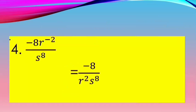Example 3: 7 to the power of negative 4, b to the power of 3, over c to the power of negative 2. The 7 to the power of negative 4 in the numerator moves to the denominator, and c to the power of negative 2 in the denominator moves to the numerator. So we get b cubed, c squared over 7 to the power of 4, which equals b cubed c squared over 2401. Example 4: Negative 8r to the power of negative 2 over s to the power of 8 — only variables with negative exponents are moved. The negative 8 stays in the numerator since it has no negative exponent. R to the power of 2 moves to the denominator. Final answer: negative 8 over R squared, s to the power of 8.